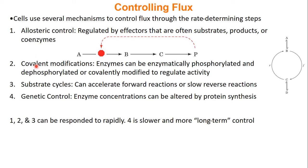You can also have covalent modification — enzymes can be phosphorylated, dephosphorylated, or covalently modified to either speed up or slow down activity. Third, you can change the speed of substrate cycles. Since forward and reverse paths are usually done by different enzymes, for a rate-limiting step with both a forward and a reverse enzyme, we can control the amount of product not only by modifying the forward reaction but also by modifying the reverse reaction — speeding up or slowing down either one changes how much metabolite flows forward.